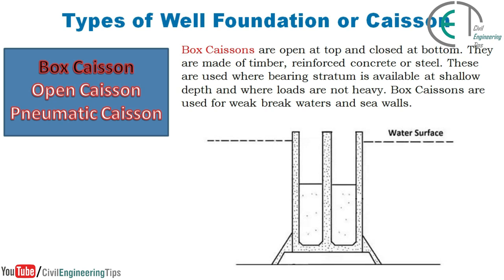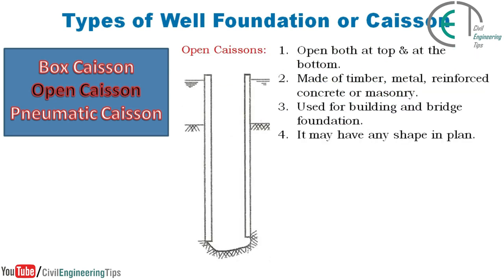Now let's discuss about the types of well foundation or caisson. There are three types of well foundation: box caisson, open caisson, and pneumatic caisson. Box caissons are open at top and closed at bottom. They are made of timber, reinforced concrete, or steel. These are used where the bearing stratum is available at shallow depth and where loads are not heavy. Box caissons are used for weak breakwaters and sea walls.